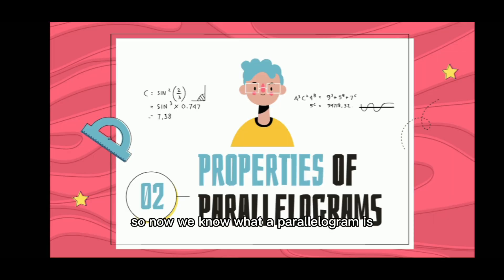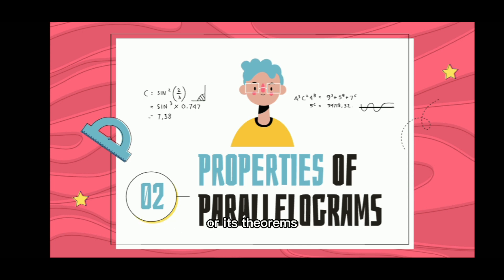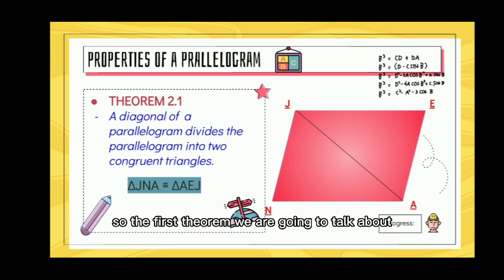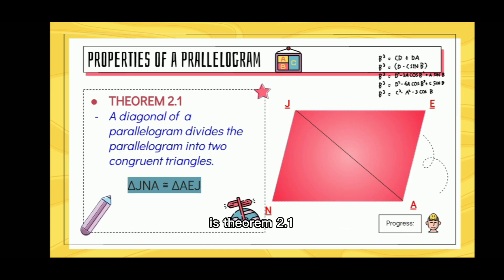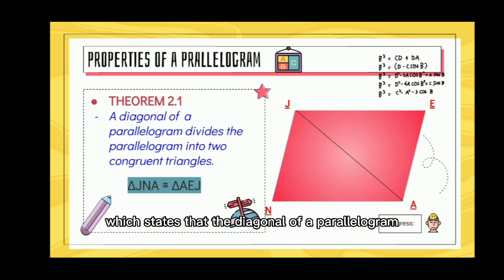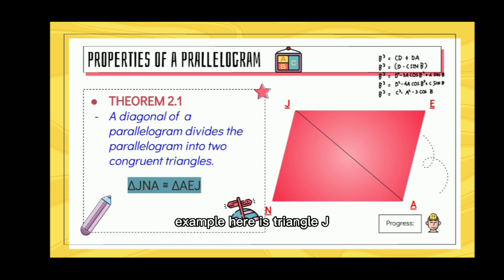Now that we know what a parallelogram is, we are going to talk about its properties or theorems. The first theorem is Theorem 2.1, which states that a diagonal of a parallelogram divides the parallelogram into two congruent triangles. An example is triangle JNA is congruent to triangle AEJ.